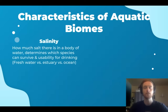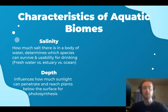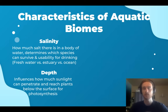First, we'll cover four characteristics of aquatic biomes. Salinity refers to how much salt is found in a body of water, and it determines which species can survive in that body of water and whether or not it's suitable for drinking water. Depth is going to influence how much sunlight can penetrate the surface of the water — how much sunlight can reach the plants below the surface for photosynthesis.